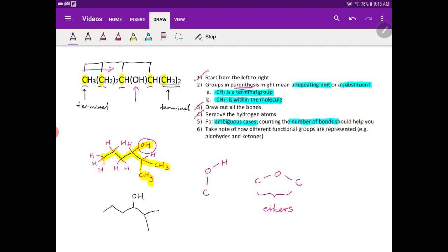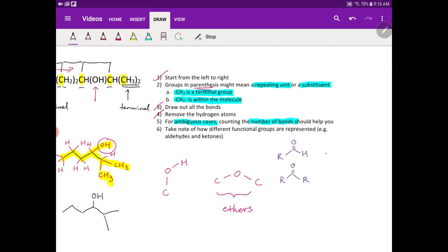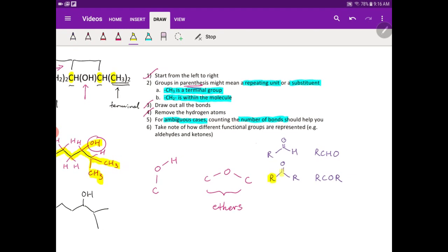And lastly, you need to know how different functional groups are represented. For example, aldehydes and ketones - they are represented in different forms. Aldehydes are written in the form of R-C-H-O, while ketones are written in the form of R-C-O-R. Notice for ketones, we do read it from the left to right: R, C, O, then R. But for aldehydes, we go R, C, H, and then we go back again to this oxygen.